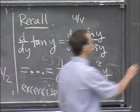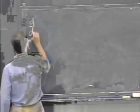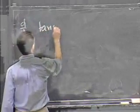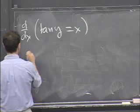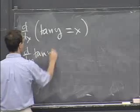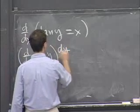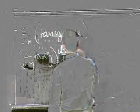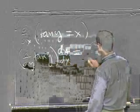And now we're just going to differentiate our equation. And what do we get? We get, again, d by dy tan y times dy dx is equal to 1.